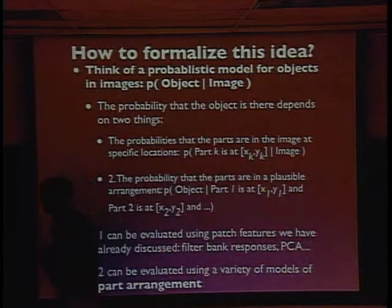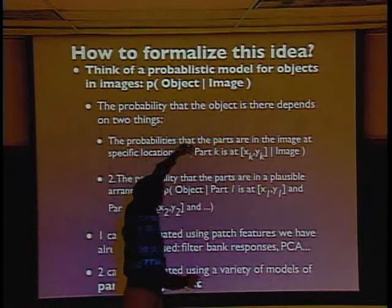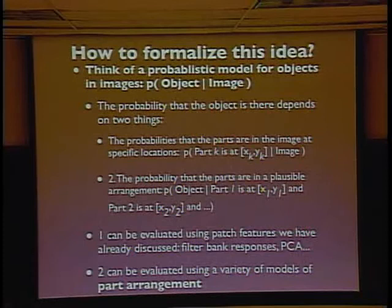So that's the very general construct: we have a probability distribution over objects and images. It's called a conditional distribution — the probability of the object being there given that we have this image. Furthermore, what we're going to do is modularize, which is one of the things that helps us most in computer science: the ability to break down big complicated tasks into a set of simpler tasks which we then solve individually.